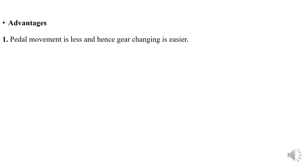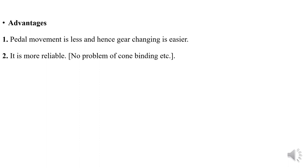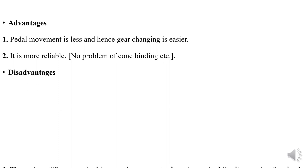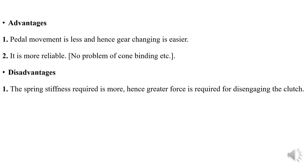The advantage of single plate clutch is that axial movement is less and gear changing is easier. It is also more reliable when compared to the cone type because there is more surface area and better surface contact is possible between the two plates — no such slipping problems, making it reliable. The disadvantage is that the spring stiffness required is more because we have to keep it always in the engaged position, and to disengage from that, a greater pedal pressing force is required from the driver. The pressing force on the clutch pedal is higher, which reduces comfort for the driver.